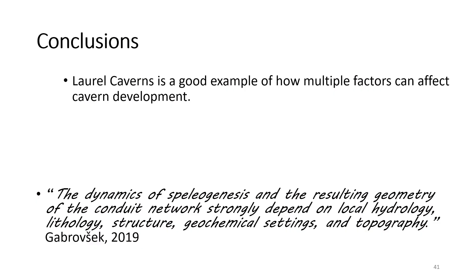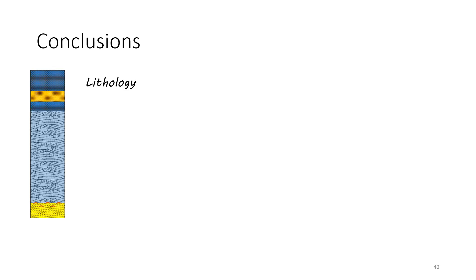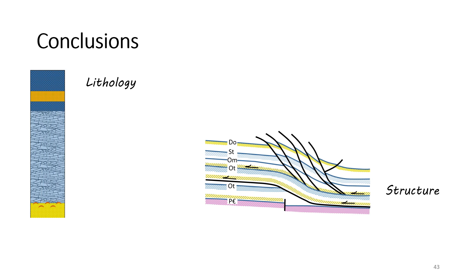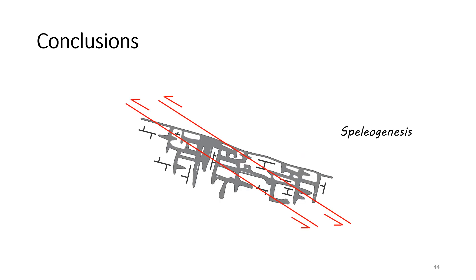In conclusion, Laurel Caverns is a good example of how multiple factors can affect cavern development. Again, here's the quote from Dr. Gervasek: 'The dynamics of speleogenesis and the resulting geometry of the conduit network strongly depend on the local hydrology, lithology, structure, geochemical settings, and topography.' In this study, we looked at the lithology of this highly siliceous limestone and the complicated structure of the Chestnut Ridge Anticline. I took the model from Rain Sorrow and tilted it about 14 degrees to represent the dip of the bedrock in the Anticline, then added two faults dipping 30 degrees. This gives you an idea of some of the complexity of the phantomization process in Laurel Caverns.